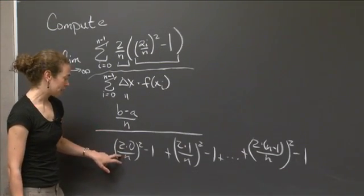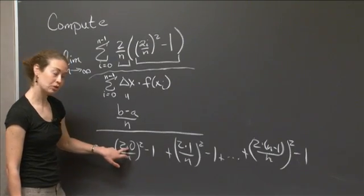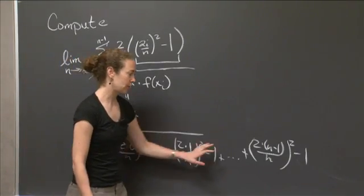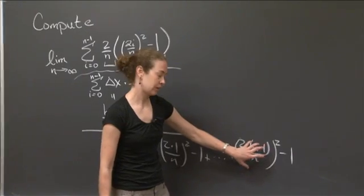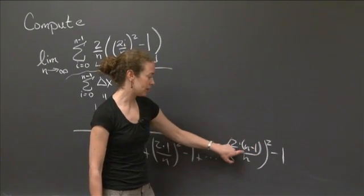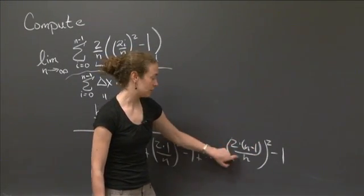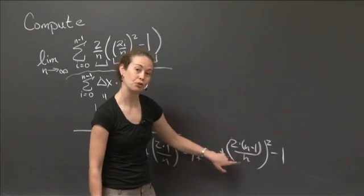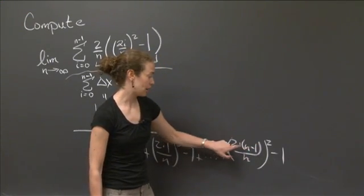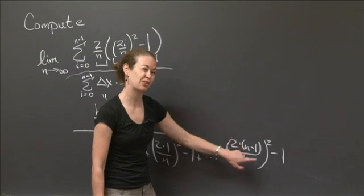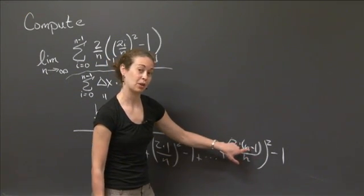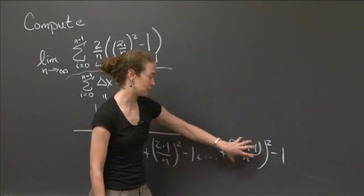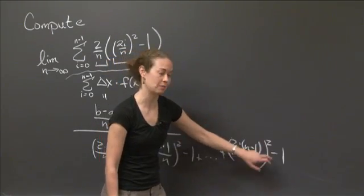I'm starting at x equals 0 here, it sure looks like. Let's look at what happens when I go all the way over here. What happens when n gets really, really big is that this ratio approaches 2. So it's 2 times (n minus 1) over n. (n minus 1) over n, as n gets arbitrarily large, as n gets really big, this approaches 2. So this is approaching 2 squared minus 1.